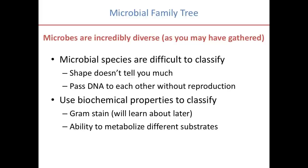Besides gram staining, people classify microorganisms based on the ability to metabolize different substrates. In 315 lab, you'll go through many standard classification procedures used to identify microbes — for example, you'll do an experiment that determines whether organisms can use citrate as a sole carbon source. If you're trying to identify a microbe, you can say this microbe is gram-positive and can use citrate as a sole carbon source. Adding more tests gets you pretty decent identification of the type of microbe you're dealing with.